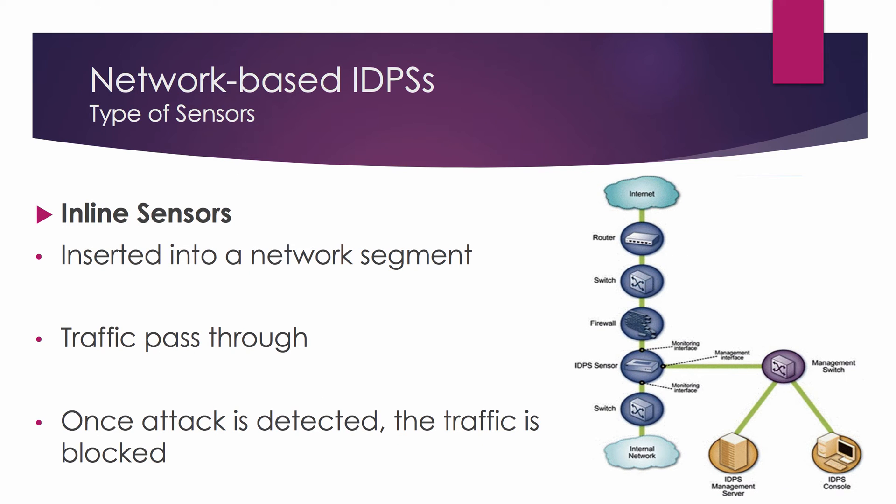An inline sensor is inserted into a network segment so that the traffic it is monitoring must pass through the sensor. This type of sensor is used to stop attacks by blocking network traffic and is usually placed where firewalls and other security devices are positioned, like between network segments or at connections to external networks.